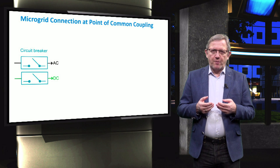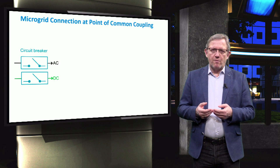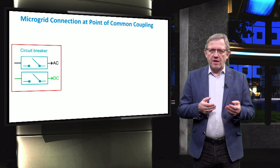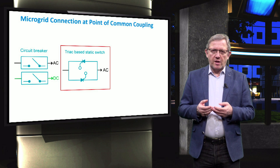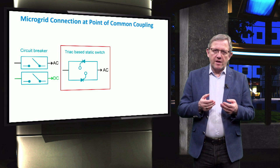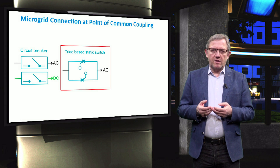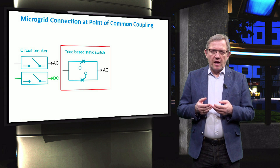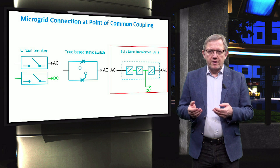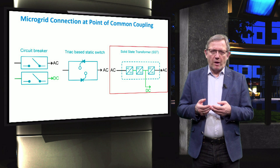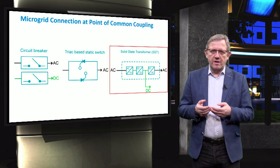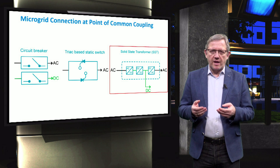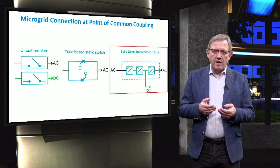The microgrid can be connected to the upstream network through various electrical components. The most commonly used component is a circuit breaker, which could be either AC or DC. The second is a static switch, which is a semiconductor-based driven switch controlling the microgrid for either grid-connected mode or islanded mode. The typical power semiconductor used for the implementation of a static switch is a triac, like the one shown in the figure, but many other circuits have been proposed in the literature. The triac is the preferred option because it supports large overcurrents, even kiloamps during some grid cycles.